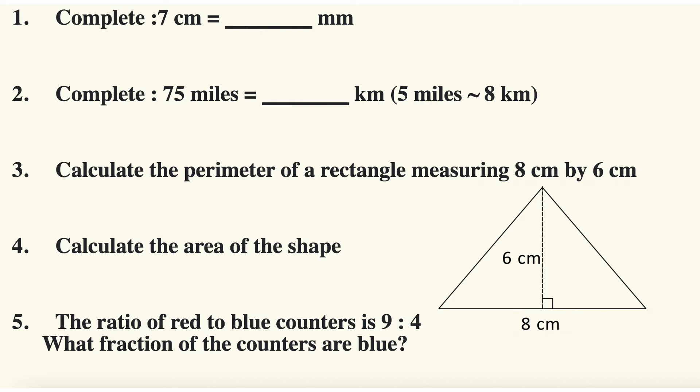We're going to start with question number one: complete this statement, seven centimeters is how many millimeters? Well, centimeters to millimeters I times it by 10, so seven times 10, I just add a zero on at the end. So seven centimeters is equivalent, the same as 70 millimeters.